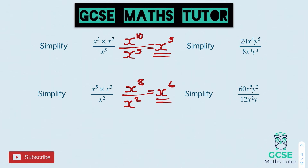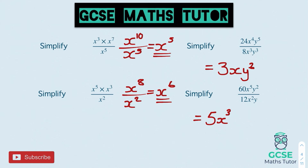For question three, divide the numbers: 24 divided by 8 is 3. For the x's: x to the power of 4 minus x to the power of 3 gives x to the power of 1, written simply as x. For the y's: y to the power of 5 minus y to the power of 3 gives y squared. Final answer: 3xy squared. For question four, 60 divided by 12 is 5. x to the power of 5 minus x squared gives x cubed. y squared divided by y gives y to the power of 1 — don't write the 1, just y. Final answer: 5x cubed y.